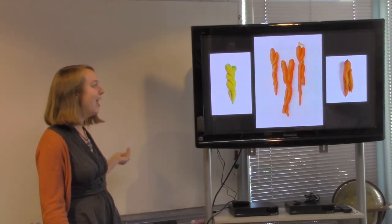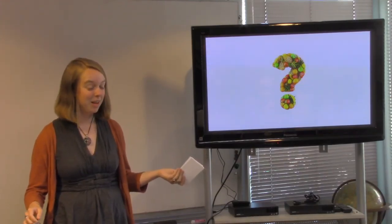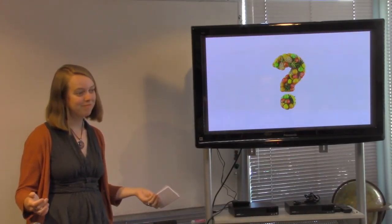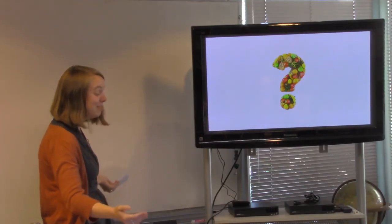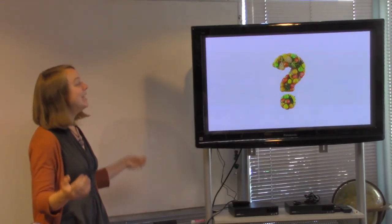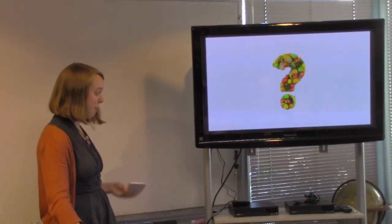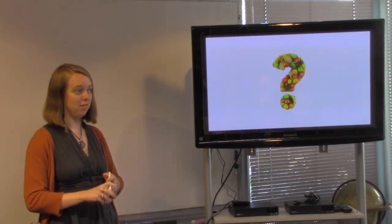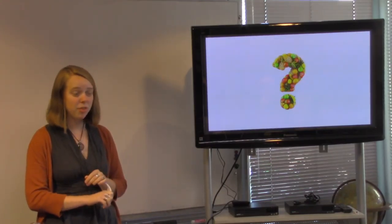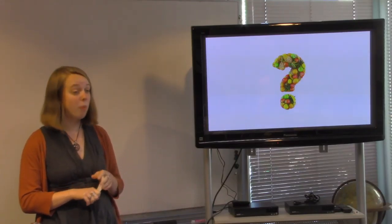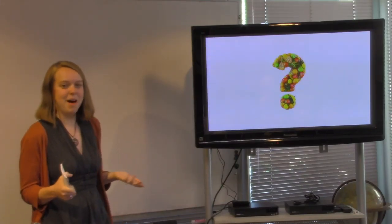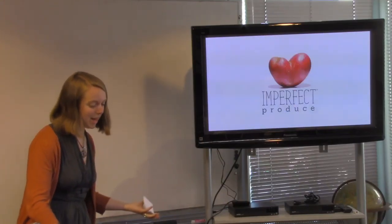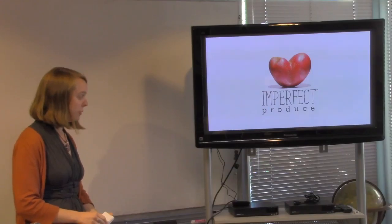So, all this food has something in common. Anyone guess? They're not perfect. Yes, exactly. And, because they're not perfect, they would be thrown away. That's what farmers are currently doing. With this ugly produce there is not really an incentive for them to do anything else with it. They have no market. No one wants to buy this ugly produce. So, it ends up in landfills. And that is what Imperfect Produce was founded around.